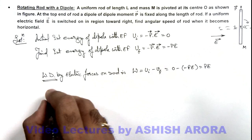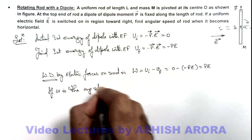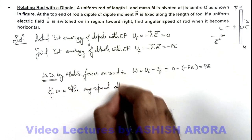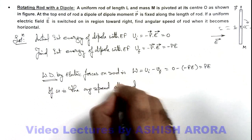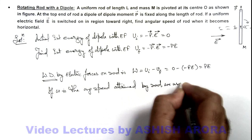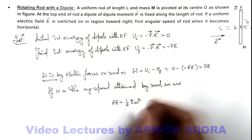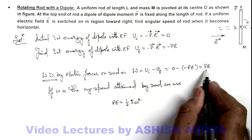If omega is the angular speed attained by rod, we use PE is equal to half I omega square, that is the kinetic energy gained by this work done.